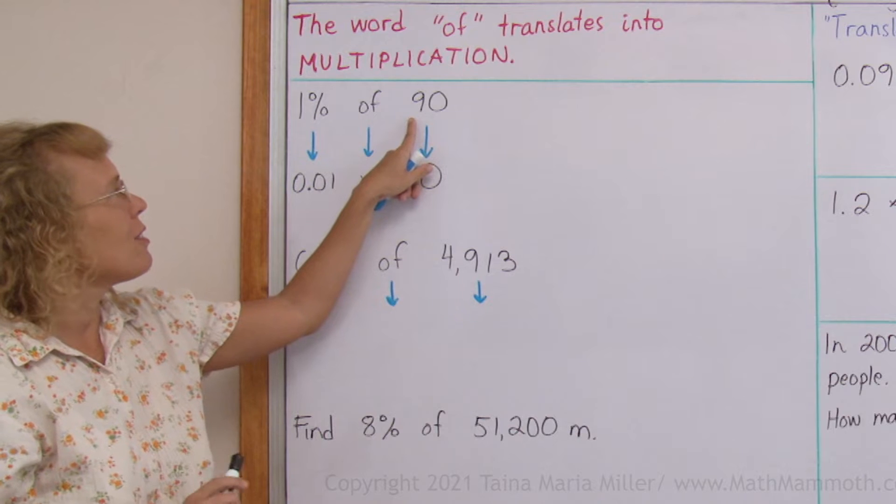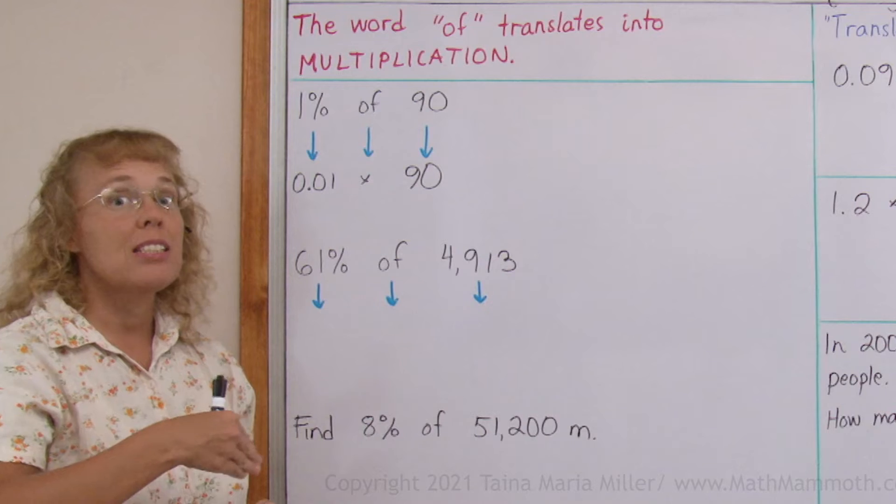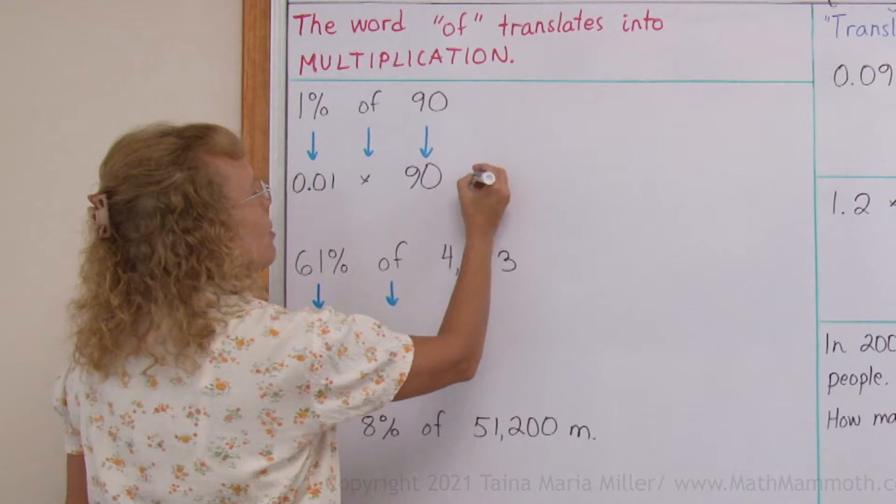10%, tenth part of 90 would be 9 and then that divided by 10 once again would be 0.9. So this here equals 0.9.